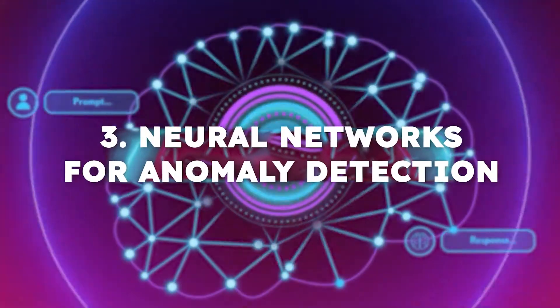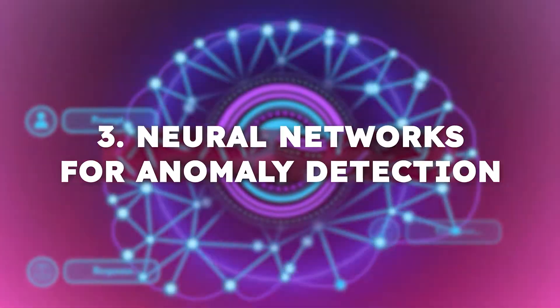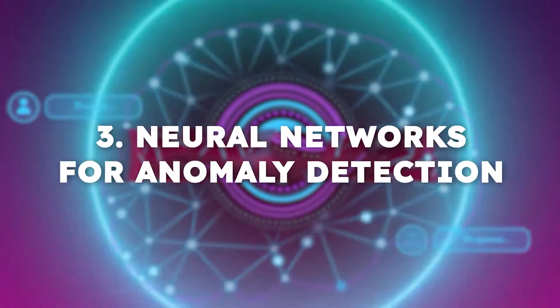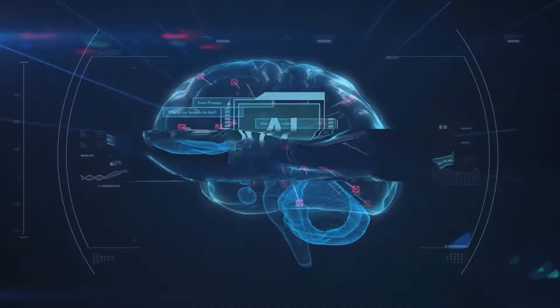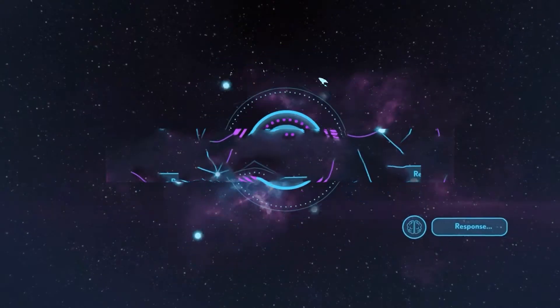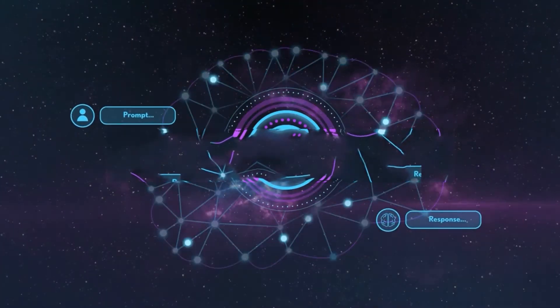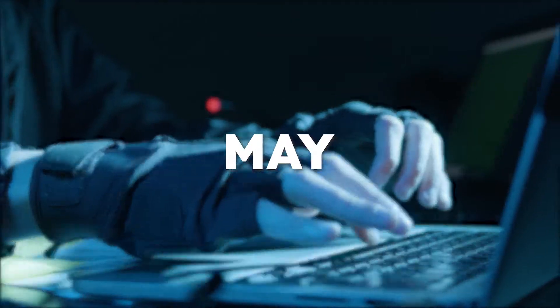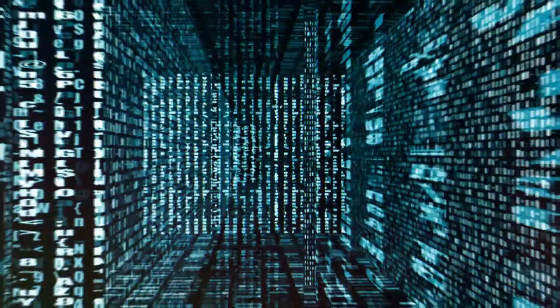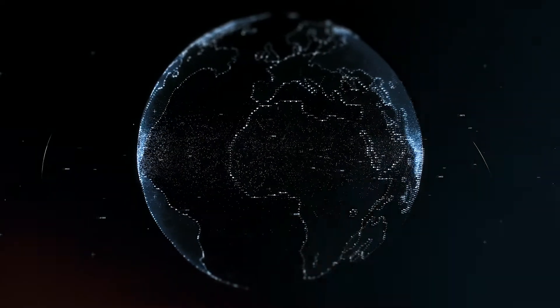3. Neural Networks for Anomaly Detection. Neural networks can process vast amounts of data to detect anomalies that may indicate a security breach. These networks can identify subtle changes in network behavior that traditional systems might miss.